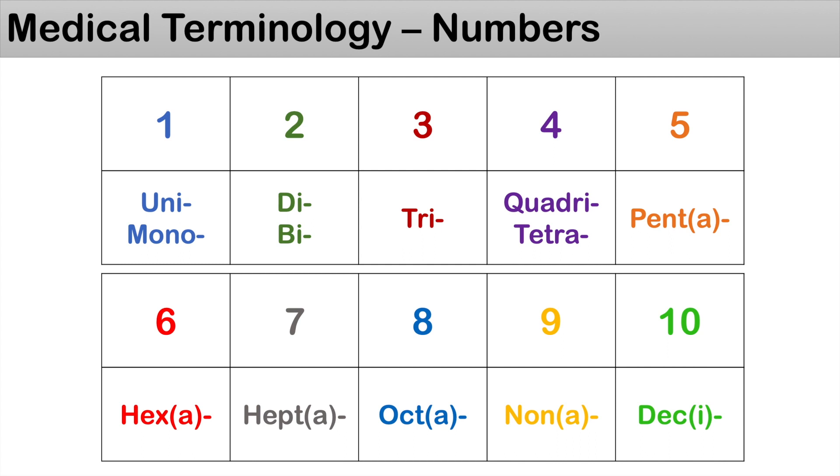For nine, it's denoted by non or nana, so you can think of nonagon. And ten is denoted by dec or deci, so you can think of the words decagon or decimal.